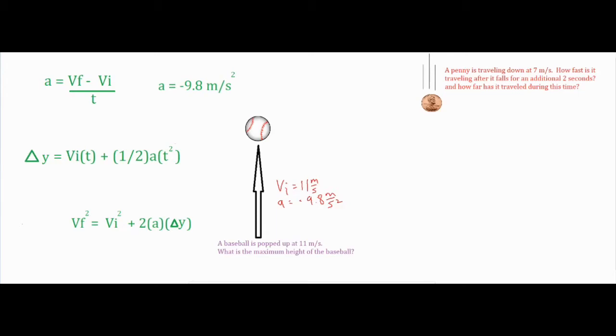So it says what is the maximum height of the baseball? Now anytime something reaches its maximum height, its final velocity at the very, very peak is always zero. Okay, so make sure you keep that in mind when you're doing free fall type problems. If you feel like you're missing stuff, you for sure have your acceleration of negative 9.8 meters per second squared, and then if you feel like you're still missing something, you probably have a zero somewhere in there.